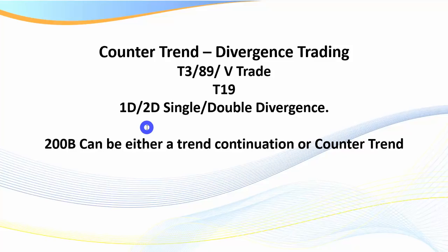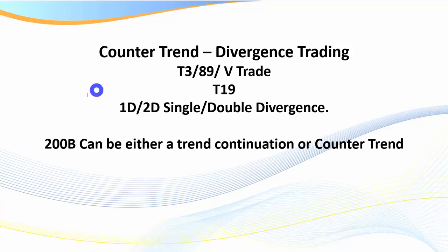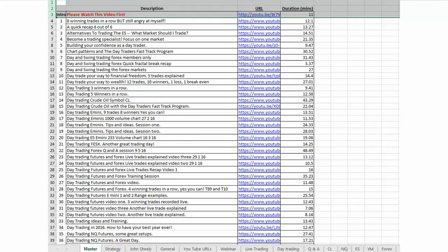For the 200B, which I used to call a trend following trade - the challenge is that with a 200B the pullback is so deep that it's quite often the start of a new trend. It can be a counter trend trade, which is why I've placed it in the counter trend area. I'm not going to include the 200B as a trend following trade because it's such a deep pullback.